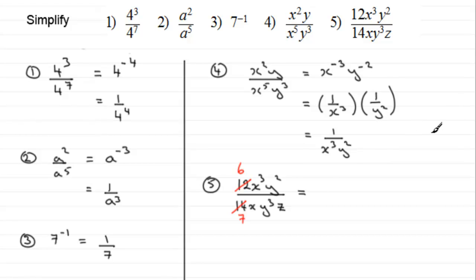So we end up with 6 over 7. And then x cubed divided by x, or x to the power 1, subtract the powers and we've got x squared. For the y's, we've got y squared over y cubed. Subtract the powers here, that's y to the power 2 take away 3, or y to the power minus 1.